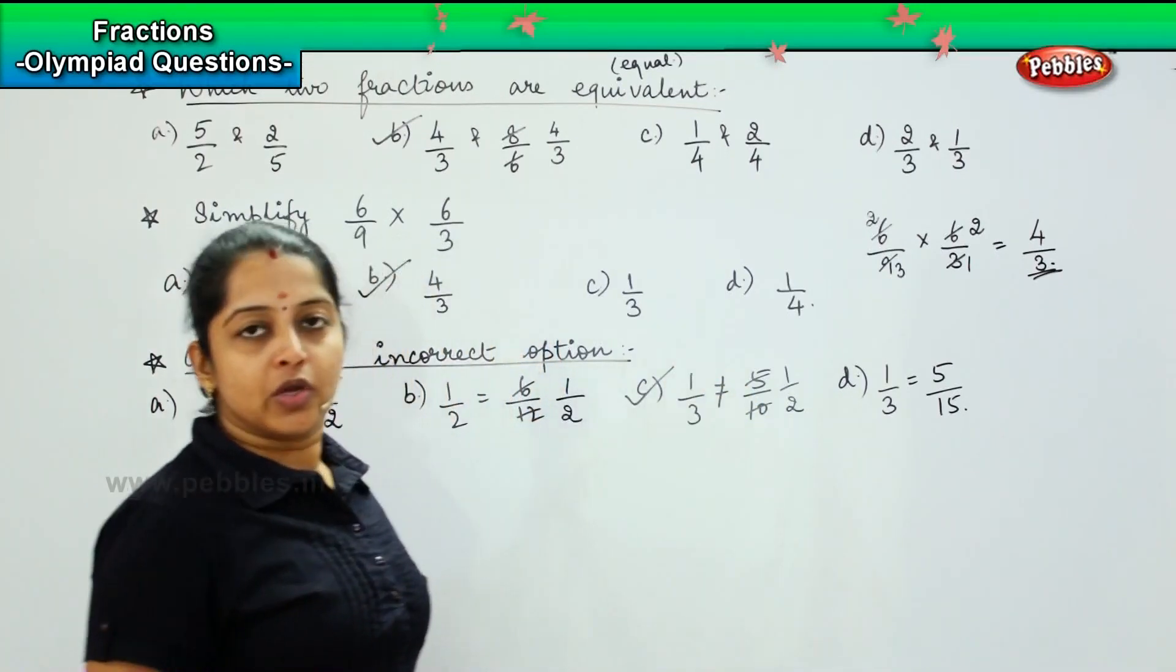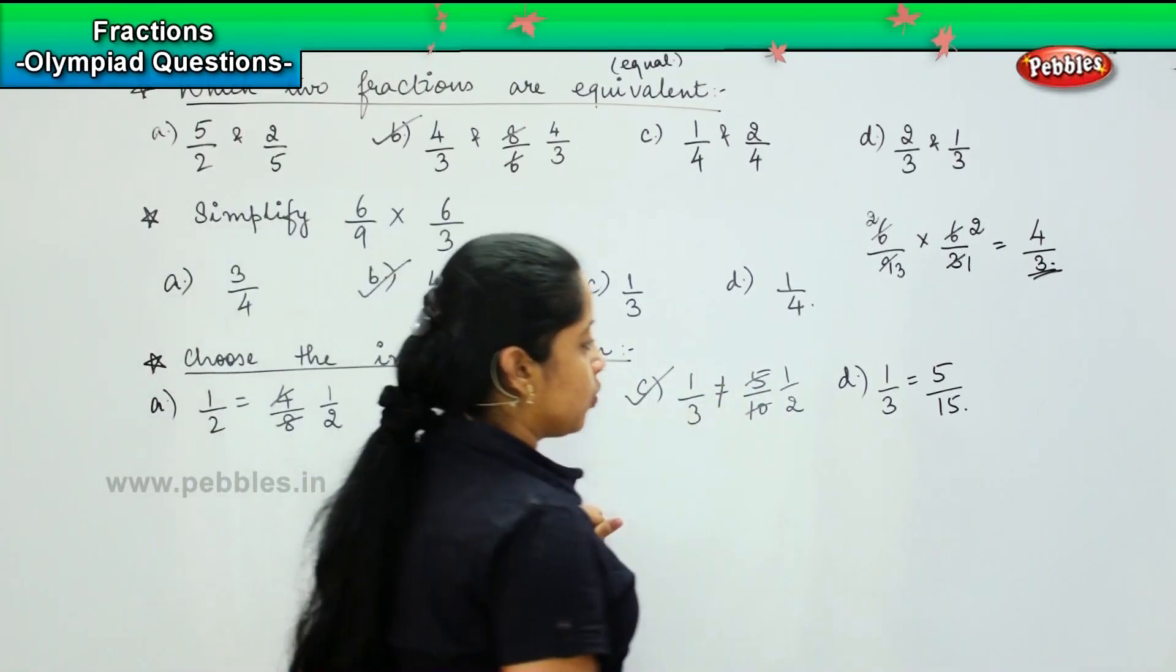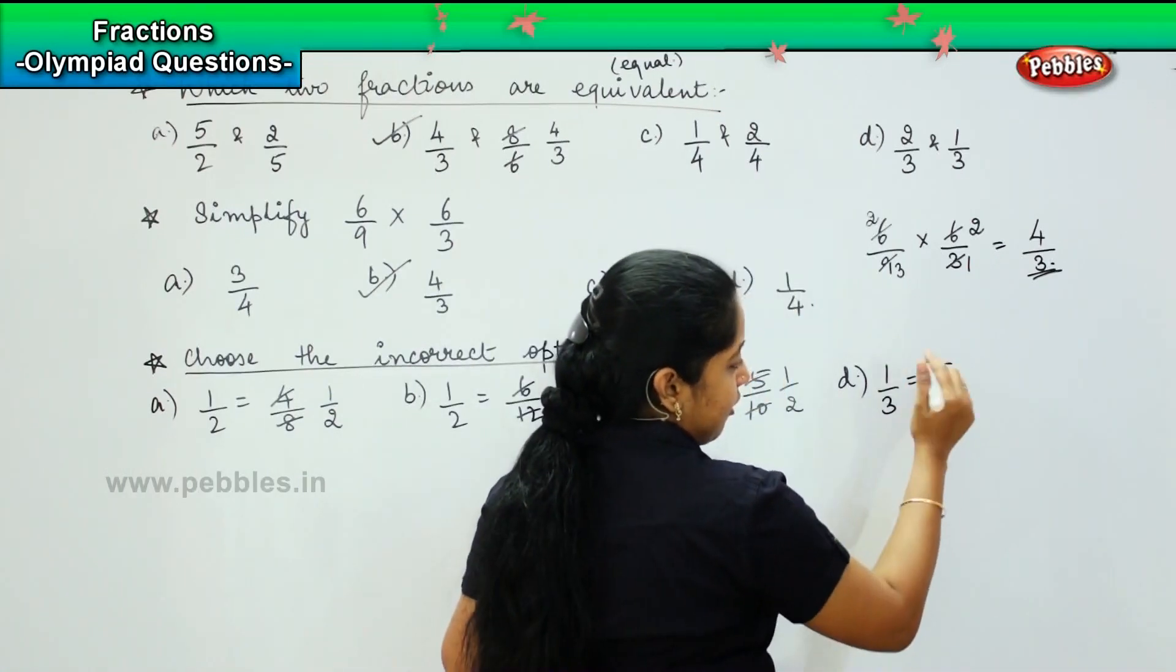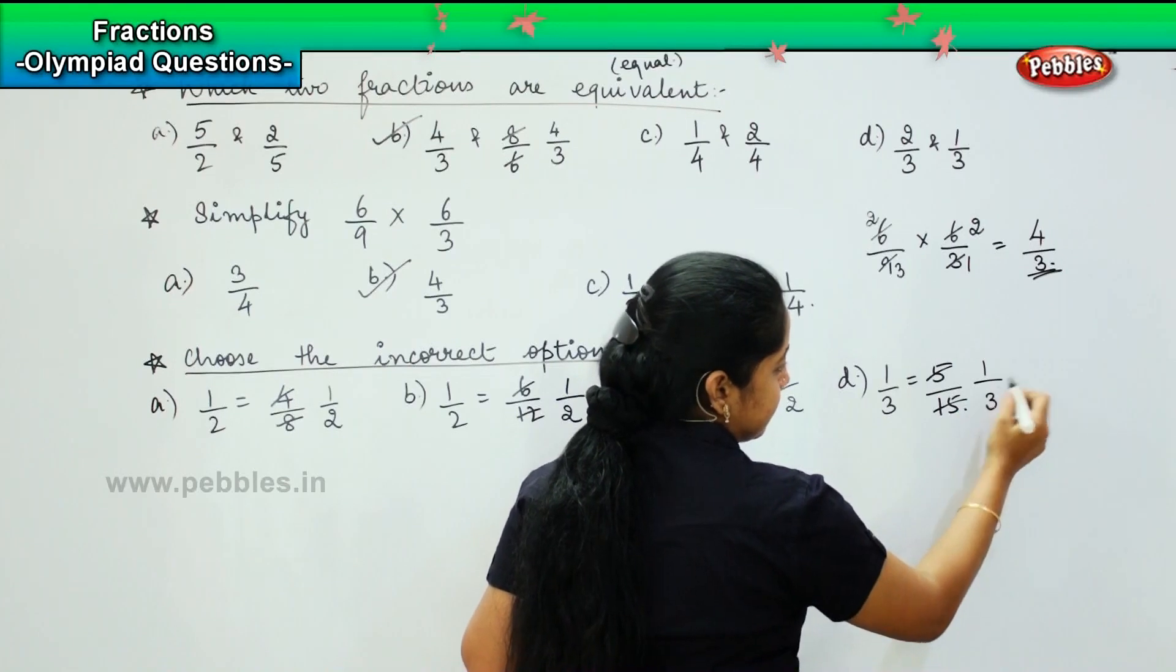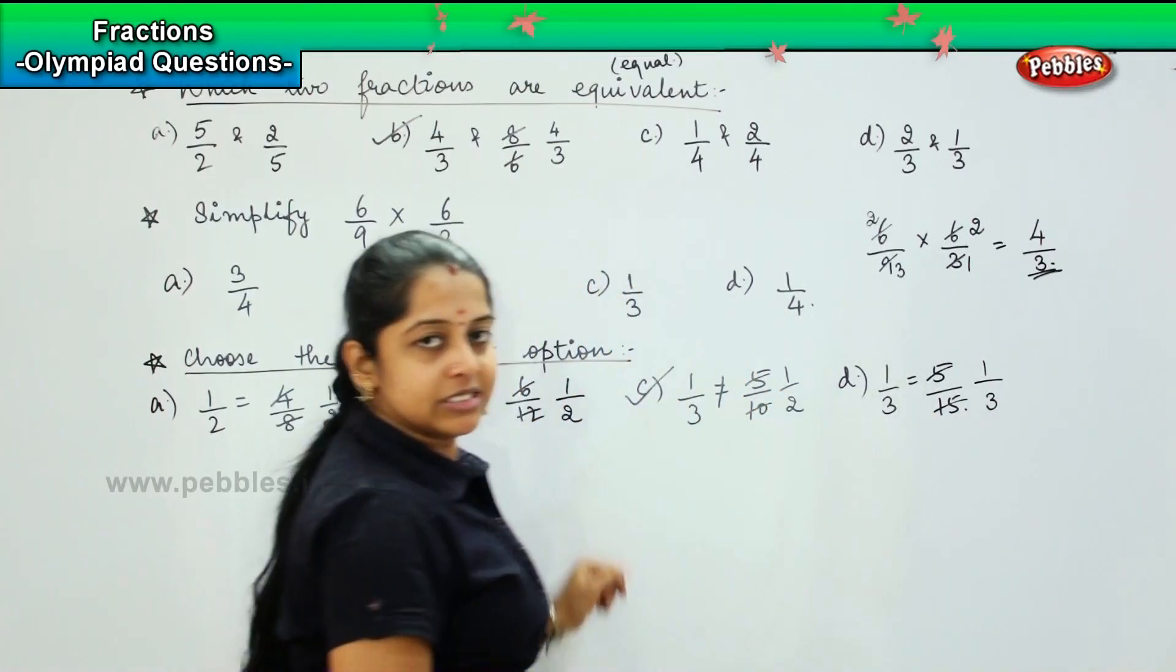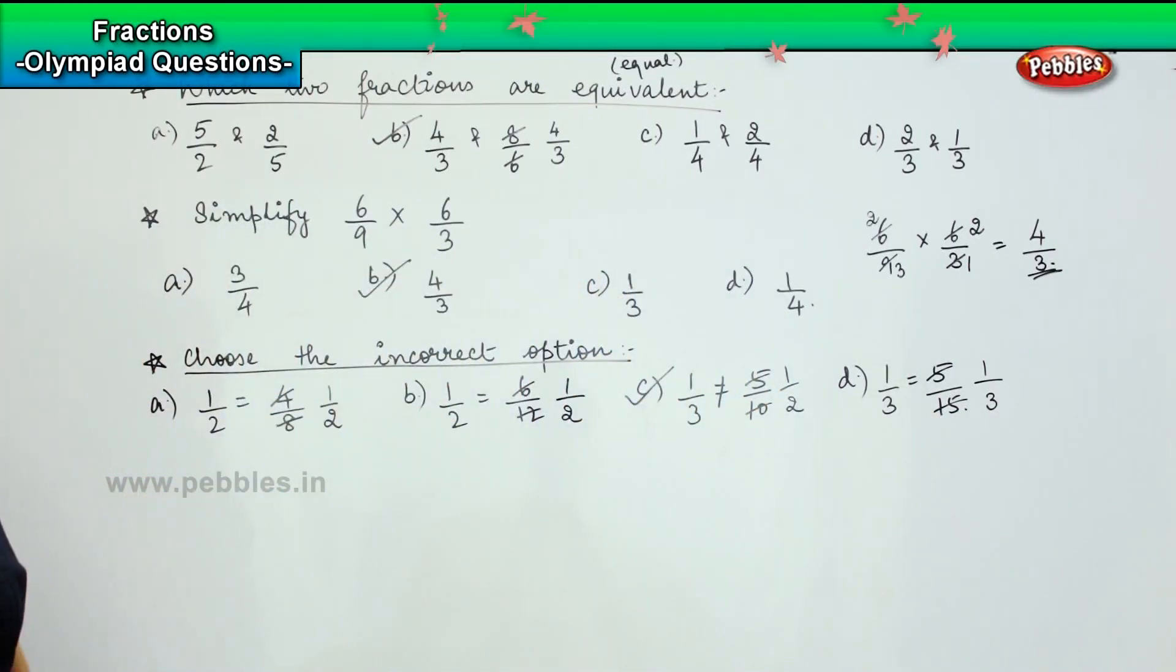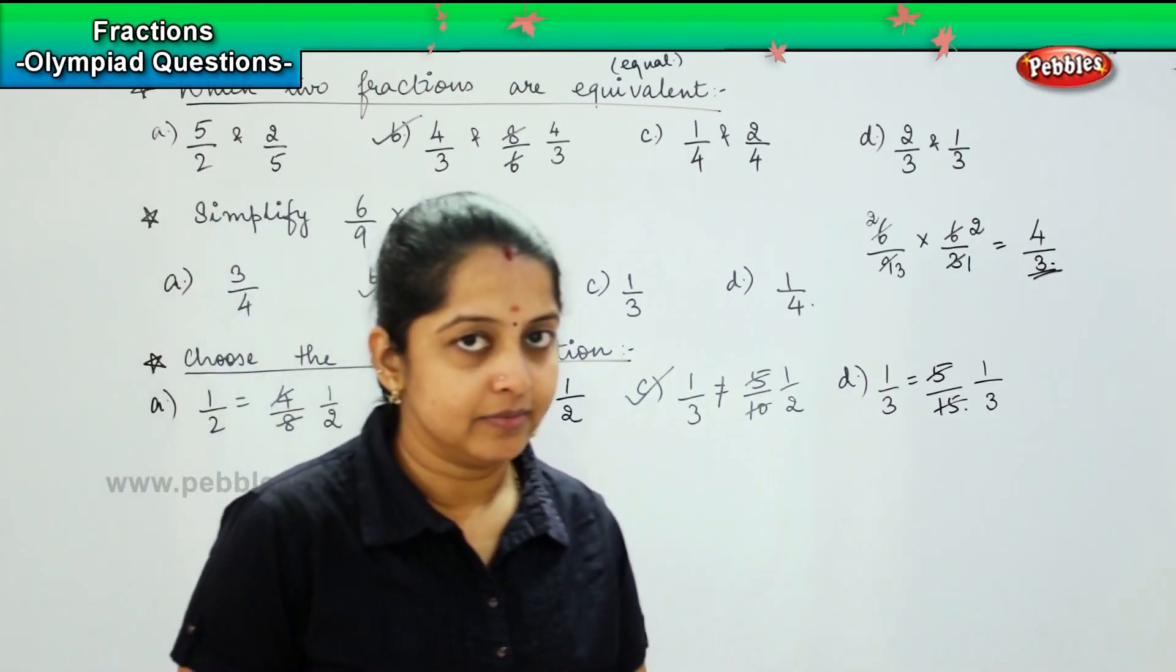Option C is the right one. Coming to the fourth option, 1/3 equals 5/15: 5 times 1 is 5, 5 times 3 is 15, so this is also the same. Option C is the right answer.